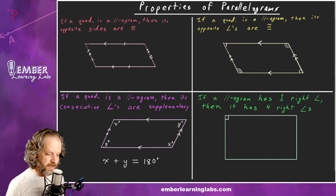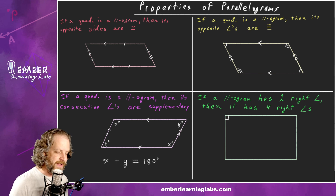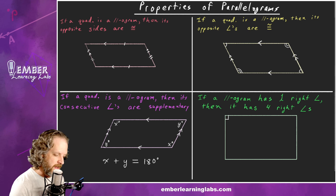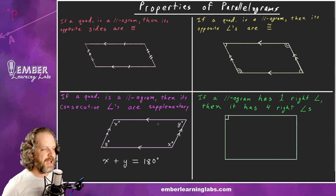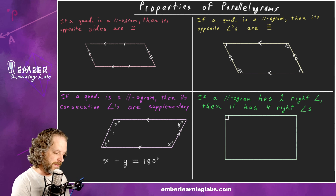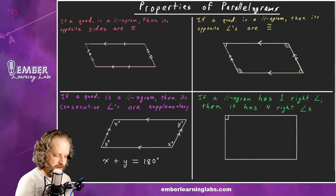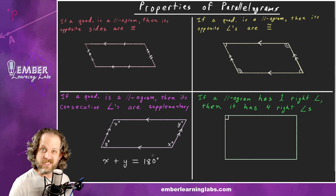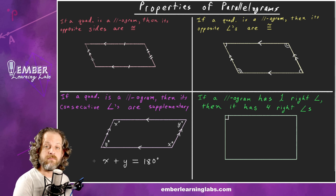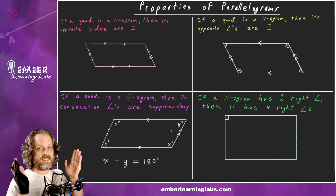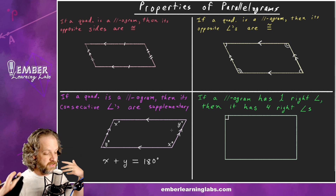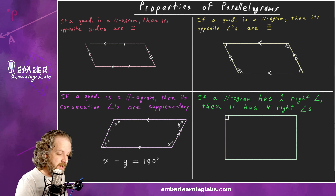Theorem 3: If a quadrilateral is a parallelogram, then its consecutive — or same-side — angles are supplementary, so x plus y equals 180. This works in both directions: x plus y equals 180 either way, because both sets of opposite sides are parallel.